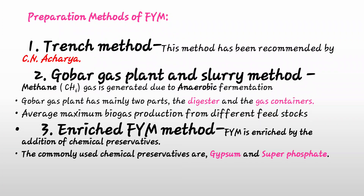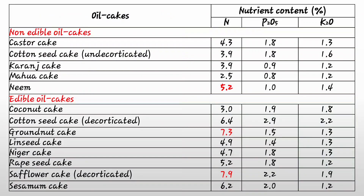In the enriched FYM method, important chemical preservatives are gypsum and superphosphate, with superphosphate being suitable for Indian conditions. Also important is the chart of edible and non-edible oil cake nutrient content. In non-edible oil cakes, neem cake contains 5.2% nitrogen, and around 7.9% nitrogen is found in safflower cake (decorticated).